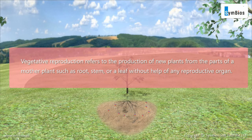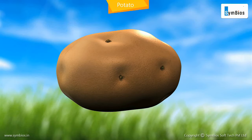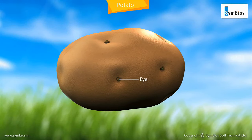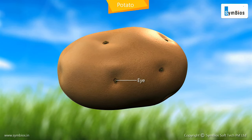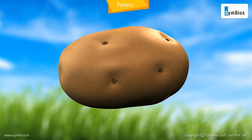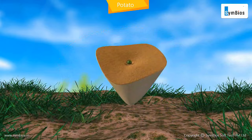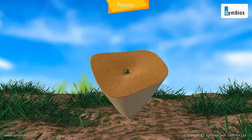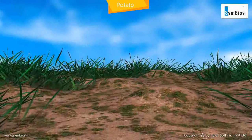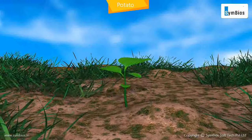Vegetative reproduction refers to the production of new plants from parts of the mother plant, such as roots, stems or leaves, without help of any reproductive organ. Potato: there are several buds present on the surface of a potato called eyes. A piece of potato with at least one eye on its surface is planted in the soil to develop a new plant.